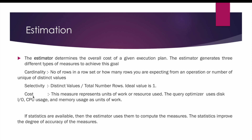The third measure is cost. Cost represents the unit of work or resources used. For example, when processing a query it needs to perform IO operations, CPU usage, and memory usage. In simple words, cost means how much IO, CPU, and memory is required to complete that operation. If statistics are available, the estimator uses them to compute cardinality, selectivity, and cost, and the statistics improve the degree of accuracy of those measures.